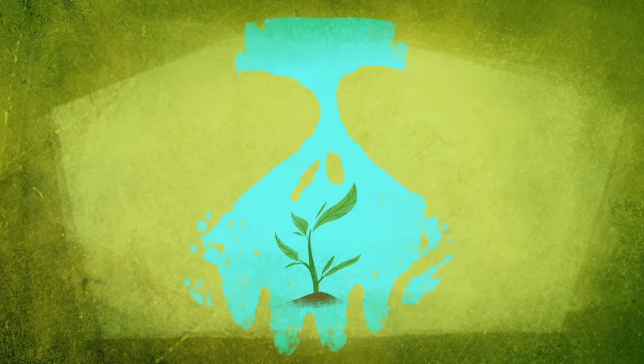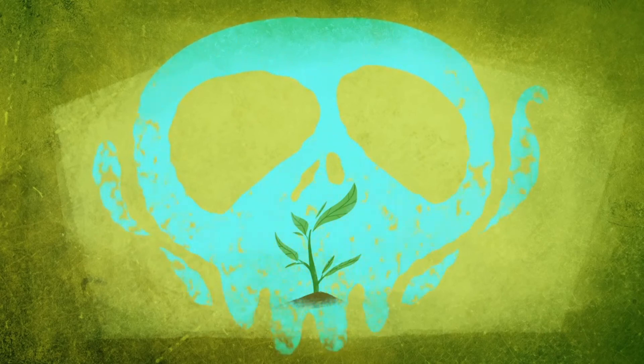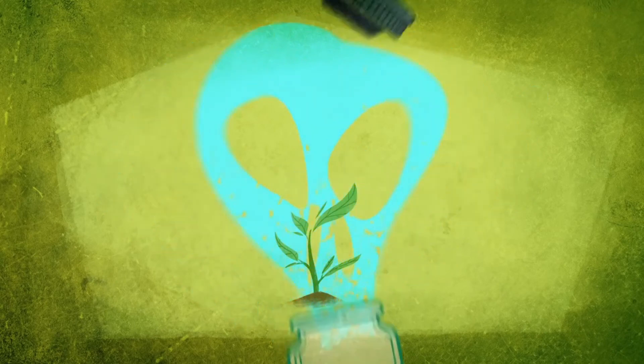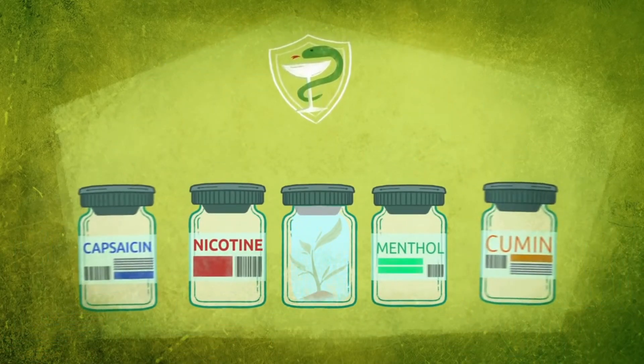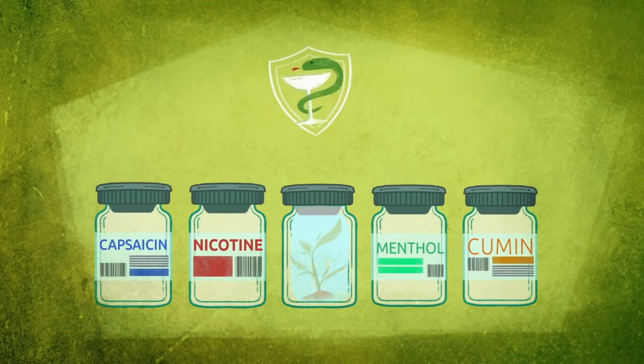Compounds toxic to microbes and insects are also produced, often tailor-made for a specific threat. Many of the plant molecules that humans have adopted as drugs, medicines, and seasonings evolved as part of plants' immune systems because they're antimicrobial or insecticidal.